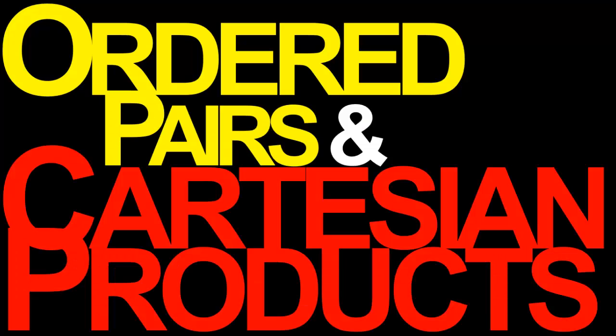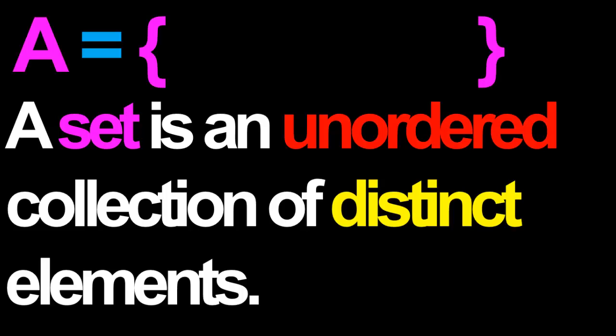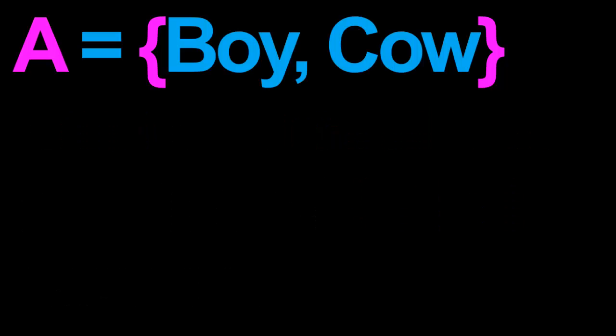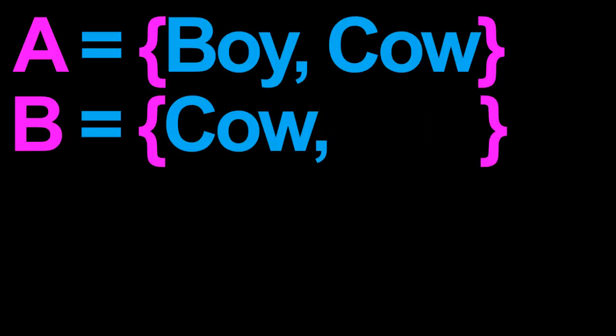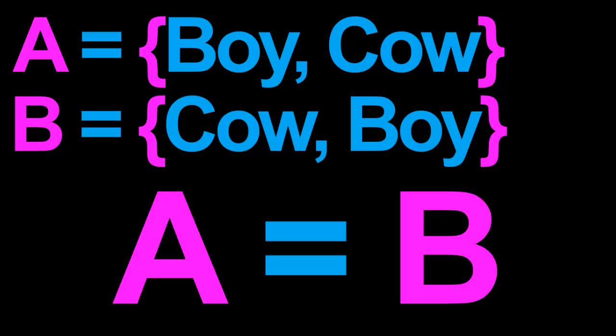Ordered pairs and Cartesian products. As mentioned many times previously, a set is just an unordered collection of distinct elements. For example, A might be the set which consists of the distinct elements boy and cow. If we are told that the set B consists of the distinct elements cow and boy, then in fact the two sets A and B are identical. In any set, the order of the elements does not matter.